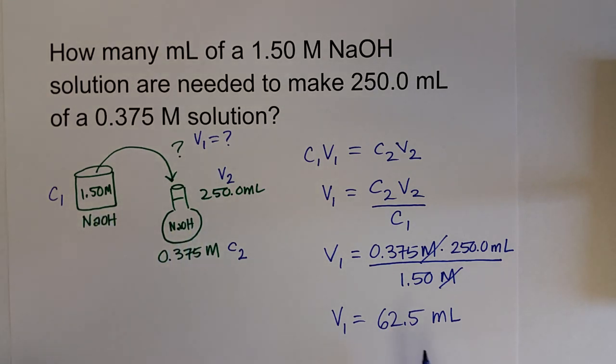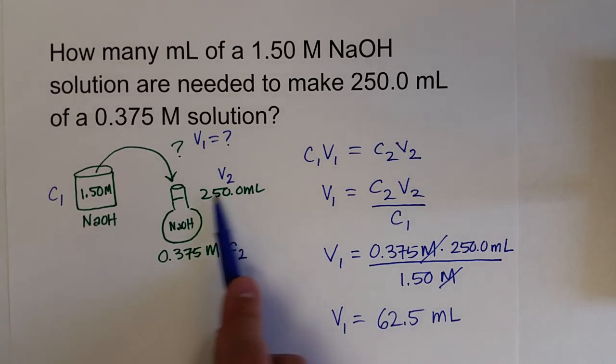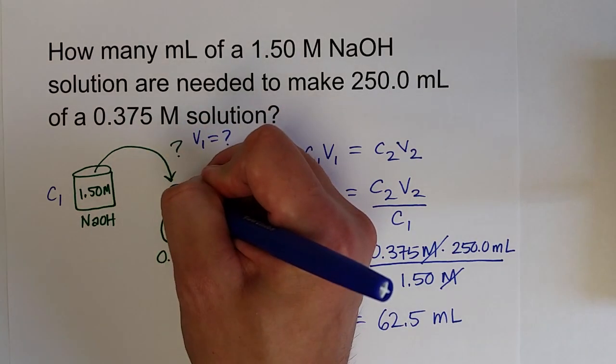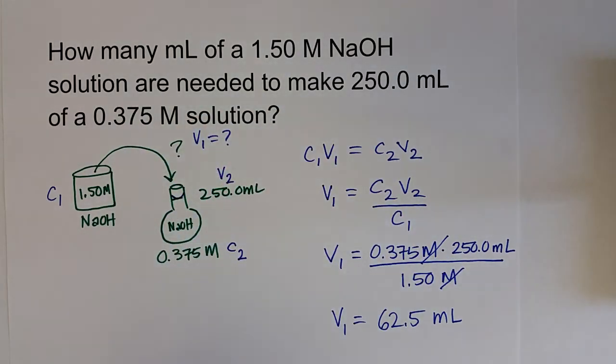What I would do is I'd measure that, probably because of the volume, I'd probably measure it with a 100 milliliter graduated cylinder. I'd pour it into a 250 milliliter volumetric flask, and then add enough water until the meniscus hits the calibration line.